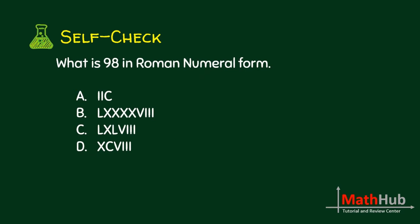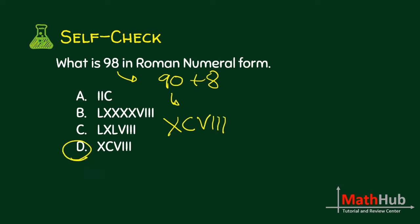What is 98 in Roman numeral form? We should have 90 plus 8. 90 is XC, and 8 is VIII. So the answer is letter D.